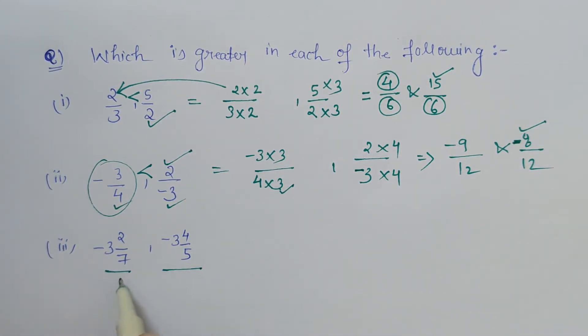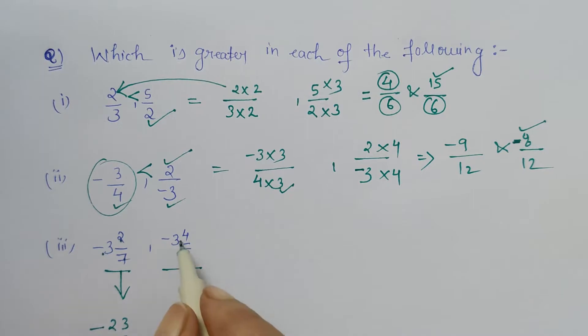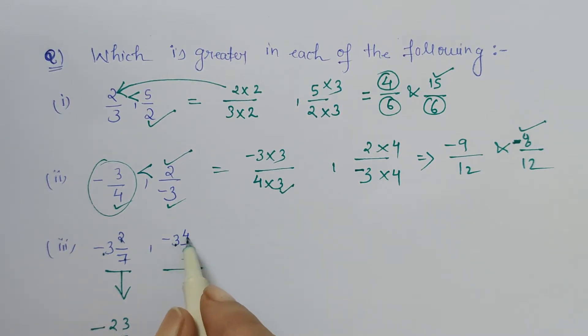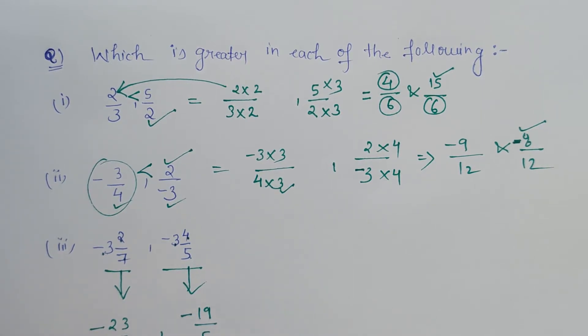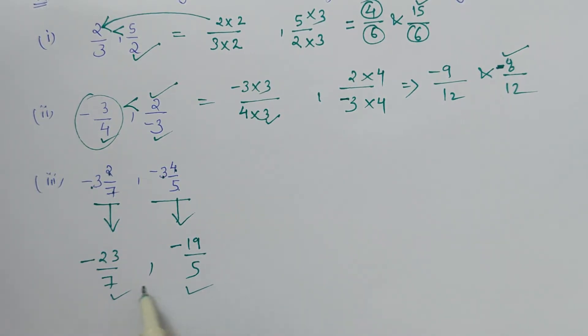Now let's solve this mixed fraction form. So first we will write it in a pure fraction form: 7 into 3 is 21, 21 plus 2 is 23, so minus 23 upon 7. And this fraction is 3 and 4 by 5, so 5 into 3 is 15, 15 plus 4 is 19, so minus 19 upon 5.